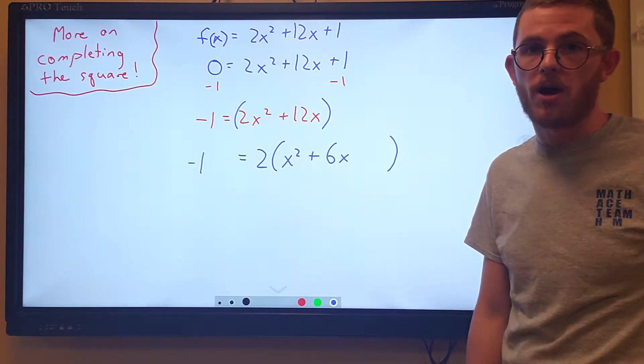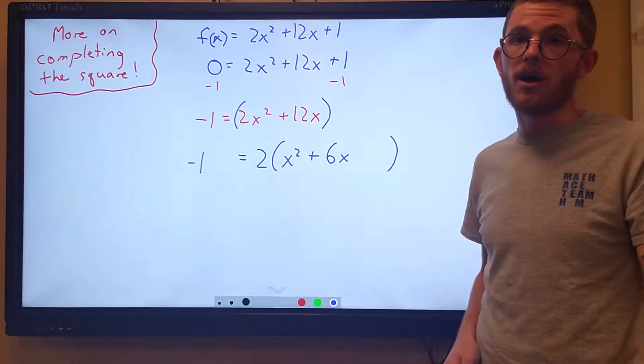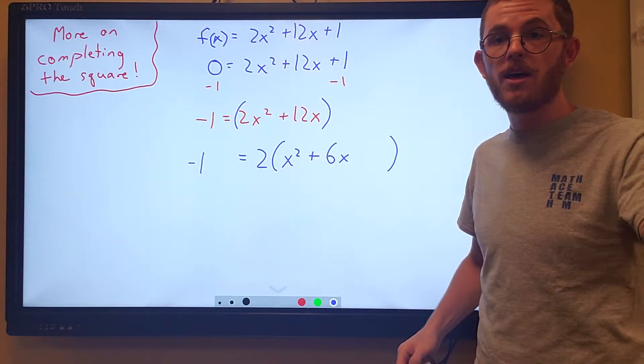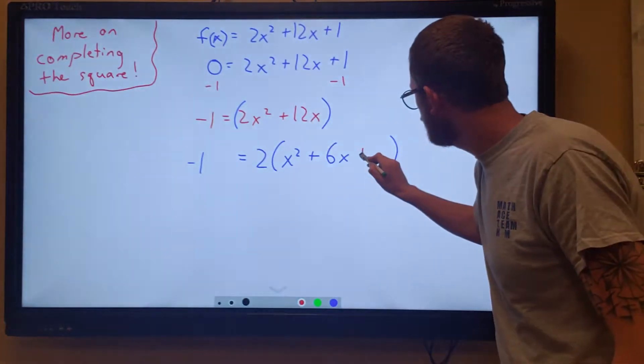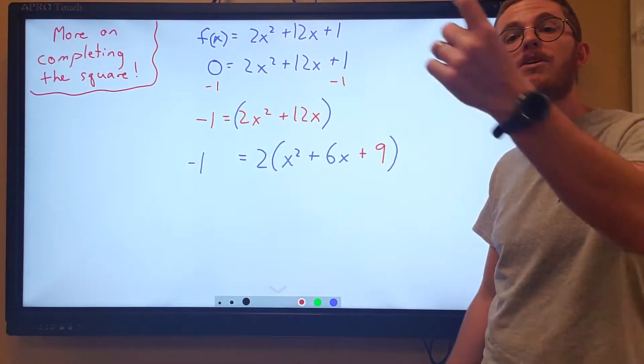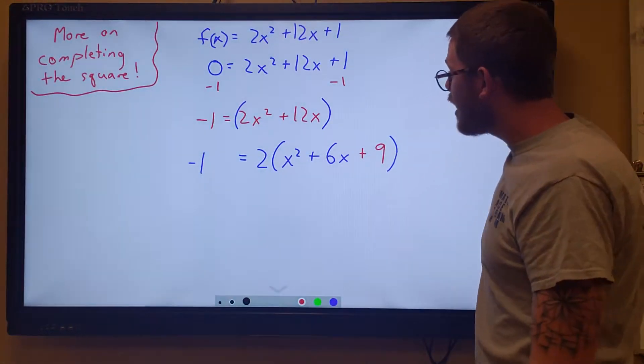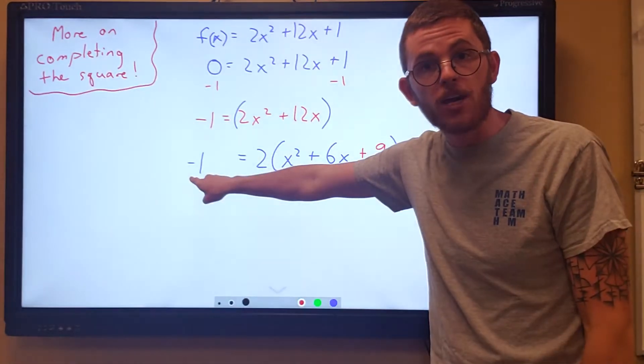So now we say our rhyme. We take the coefficient in front of the x, we cut it in half and we square it next, and we paste it on the inside right there. Half of 6 was 3, 3 squared is 9, and whatever we add to this side, we have to add to this side over here.